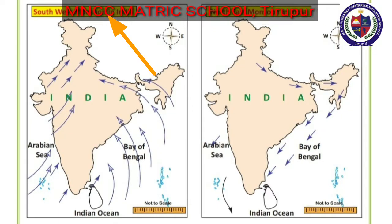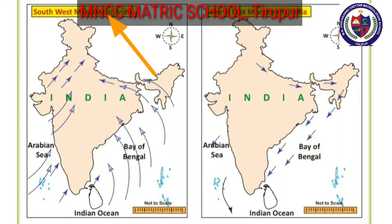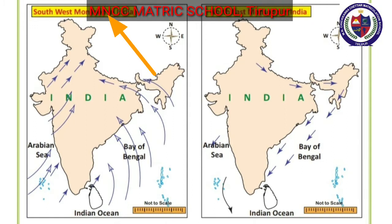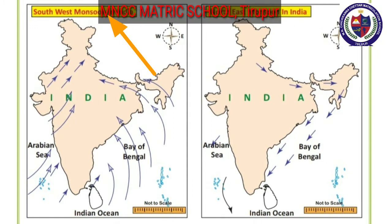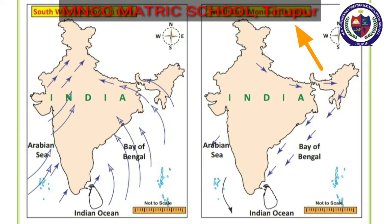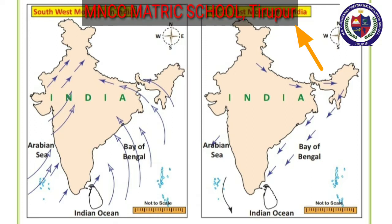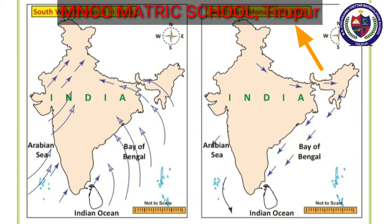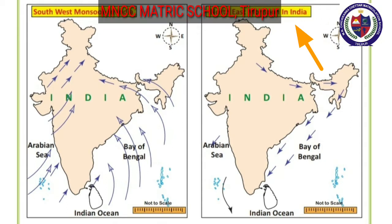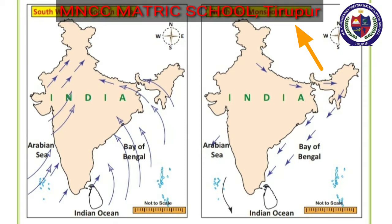Southwest monsoon: these are rain-bearing seasonal winds that flow from the Arabian Sea to the mainland of India from the southwest direction. It starts from June to September. Northeast monsoon starts from October to December. During this period, rainfall is experienced over southern states, mainly Tamil Nadu, Kerala, Andhra Pradesh, along with some parts of Telangana and Karnataka.